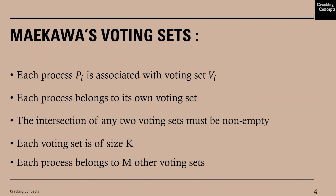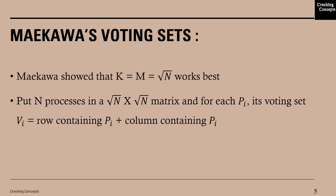Now let's look into Maekawa's voting set. Each process Pi is associated with a voting set Vi. Each process belongs to its own voting set. The intersection of any two voting sets must be non-empty — it is the same concept as that of quorums. Each voting set is of size k and each process belongs to m other voting sets.